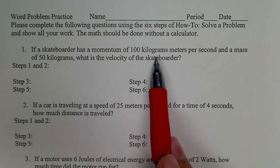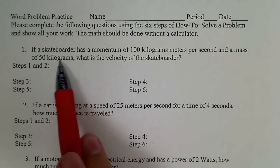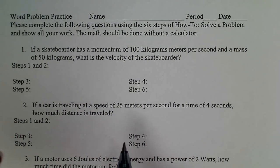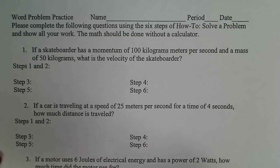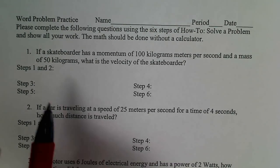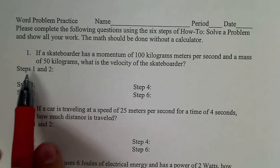If a skateboarder has a momentum of 100 kilograms meters per second and a mass of 50 kilograms, what is the velocity of the skateboarder? Now we have these steps lined up because these steps are going to keep us in order and keep us very logical. We want to make sure that we're going through a certain series that flows and makes sense. This helps us know what to do next. So where do we start?